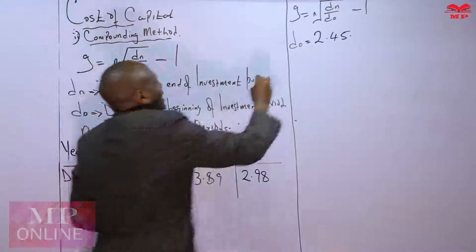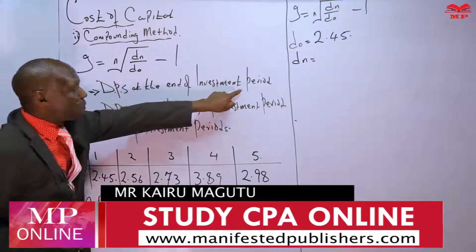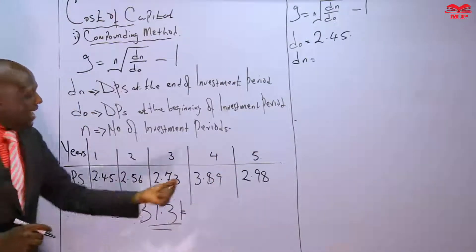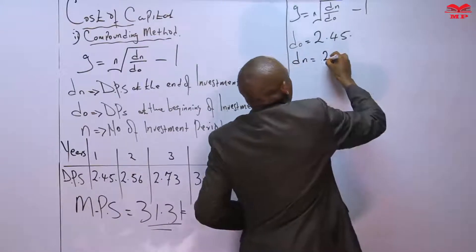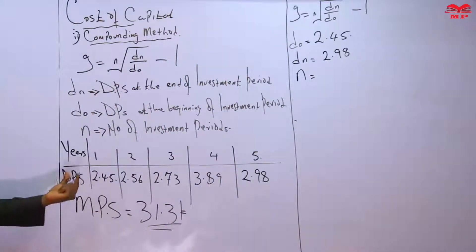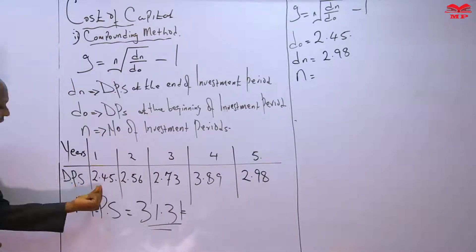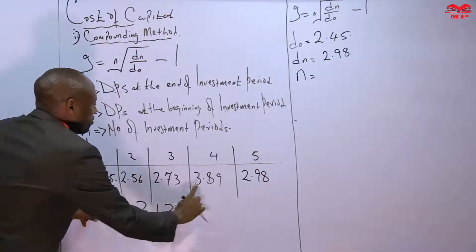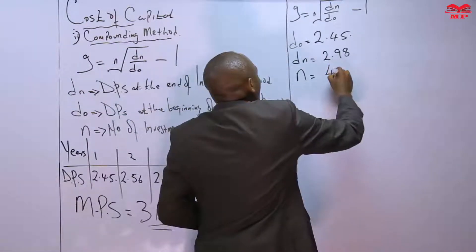Then we see that Dn is the dividend per share at the end of the investment period. The data in question provides DPS for five years. The last year is year five, so the DPS at the end of the investment period is 2.98. We need to get n. Given that the beginning is period zero, counting forward we have one, two, three, four — so our period n is equal to four years.